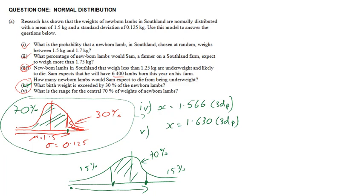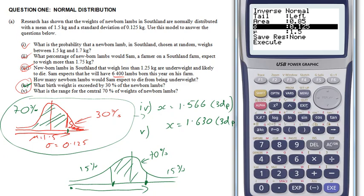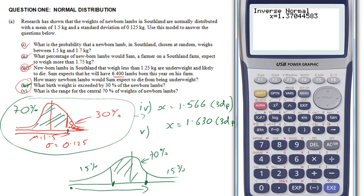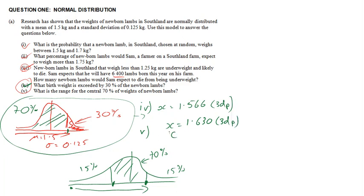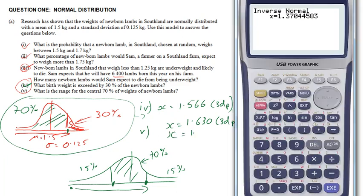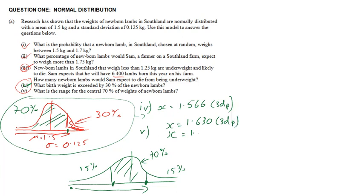I want to know that one, that's only 15%, so I can go 0.15. And that tells me that x is 1.370 to three decimal places.